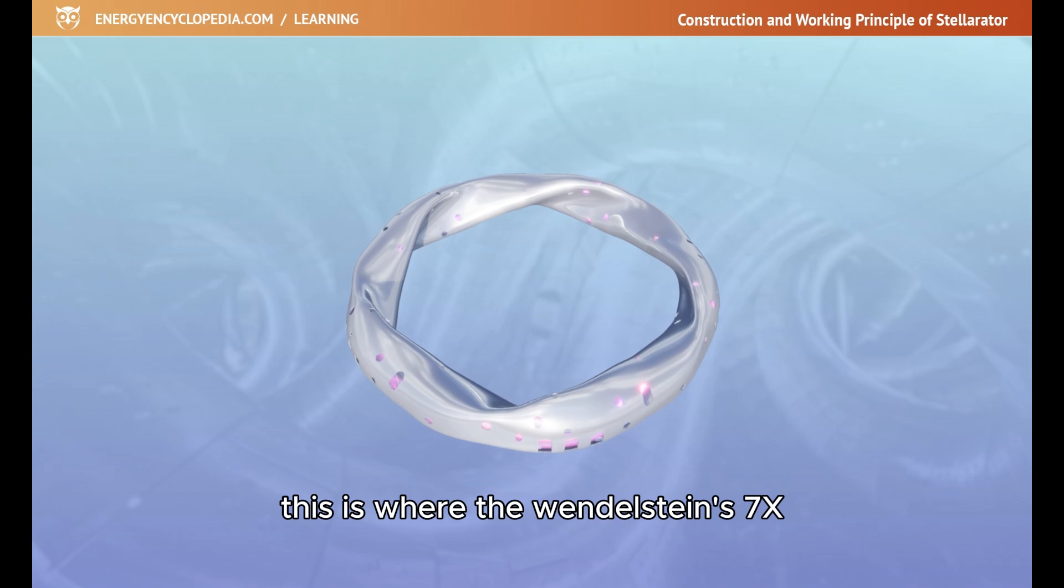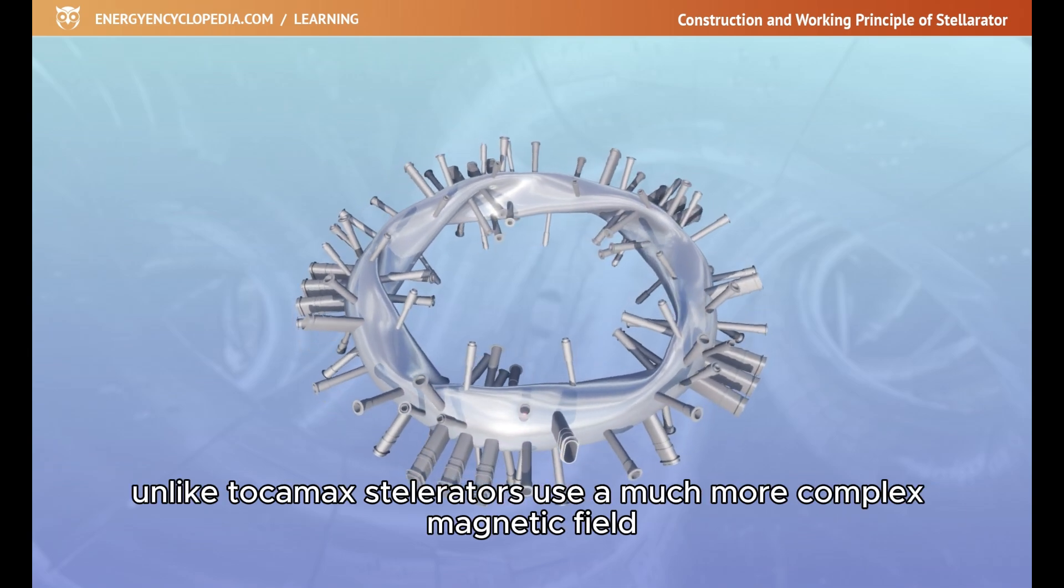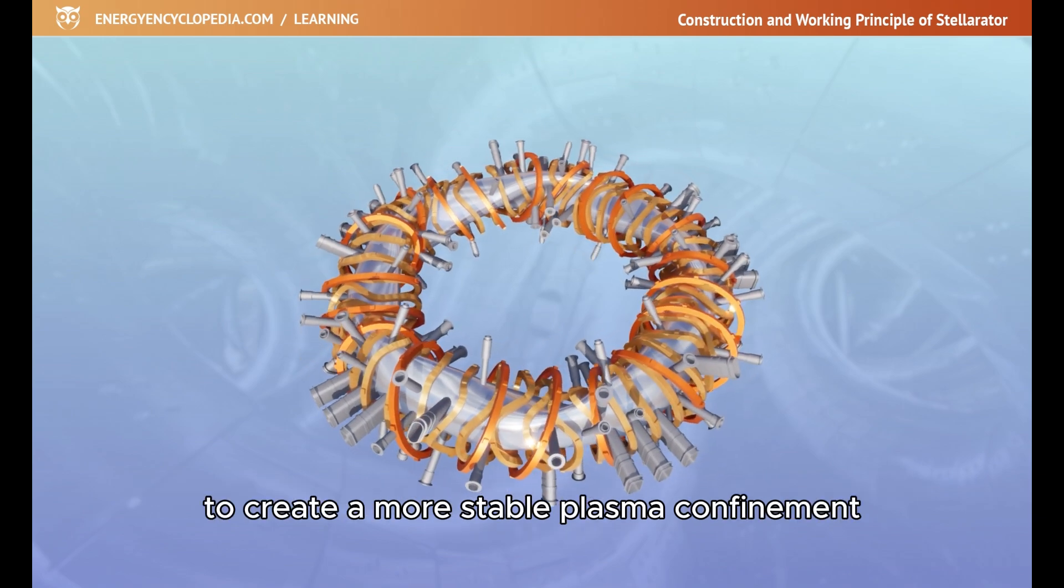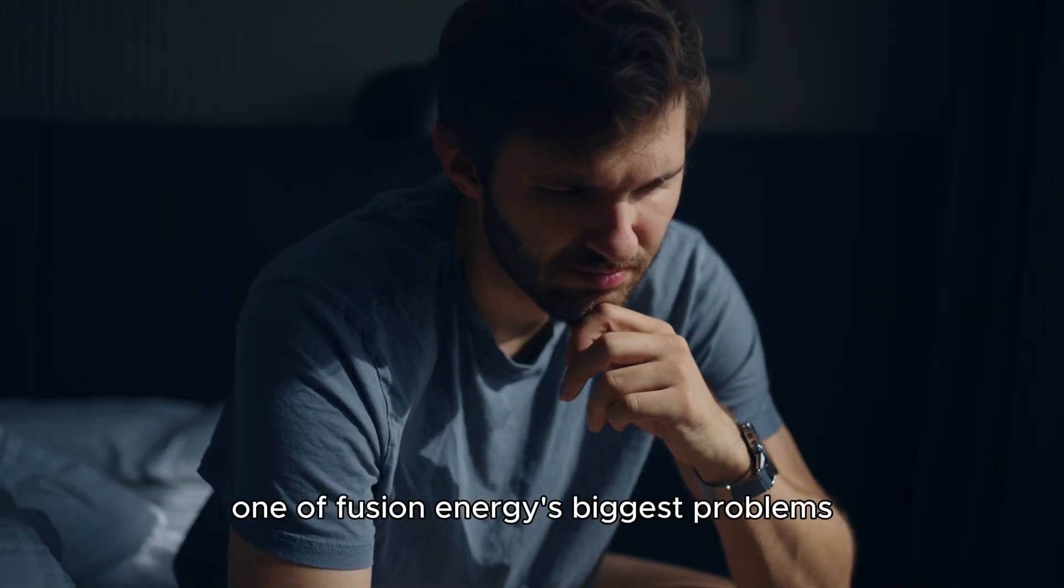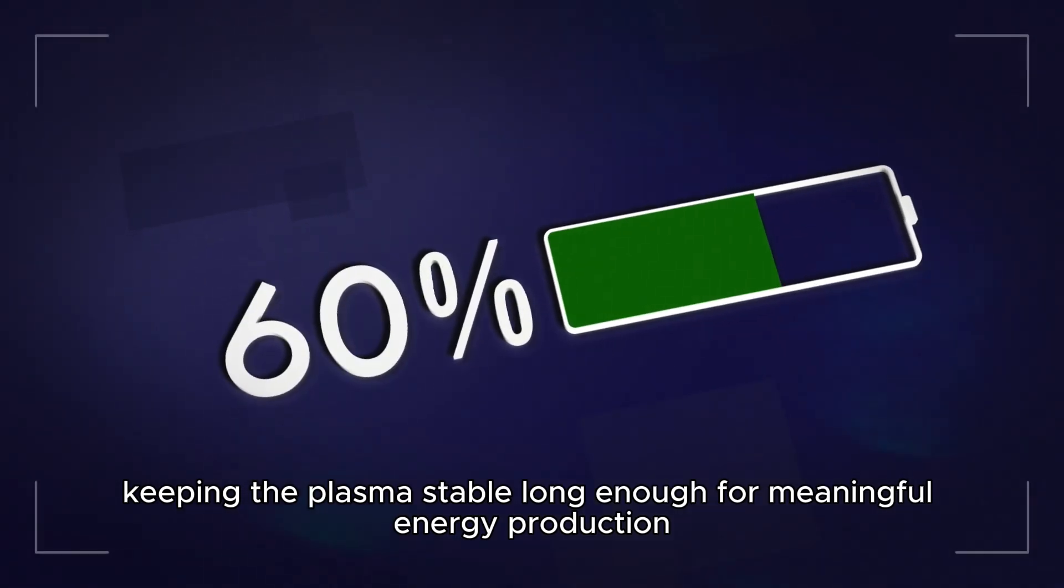This is where the Wendelstein 7X and other stellarators come into the picture. Unlike tokamaks, stellarators use a much more complex magnetic field, twisted into intricate shapes to create more stable plasma confinement. This design could potentially solve one of fusion energy's biggest problems: keeping the plasma stable long enough for meaningful energy production.